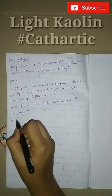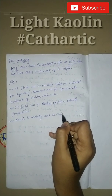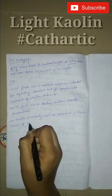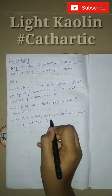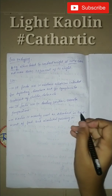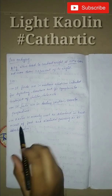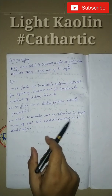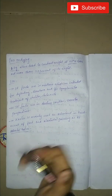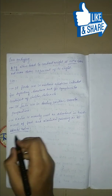Kaolin is mainly used as an absorbent in the treatment of food and alkaloidal poisoning, as it absorbs toxins. Kaolin absorbs toxins and removes poisonous substances in our stomach, making it free from toxins.